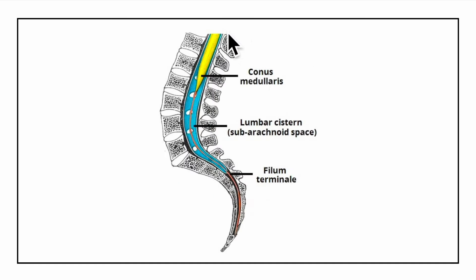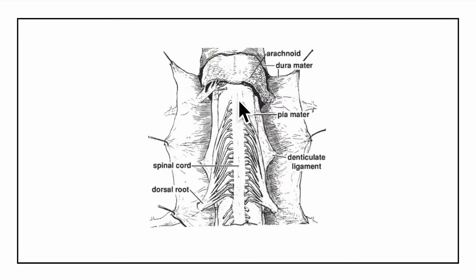In this diagram showing the lateral cross-section of the lower spinal cord and vertebral column, the spinal cord extends to the lower part of the first lumbar vertebra as the conus medullaris. Below the level of the conus medullaris, only the pia mater is continued as a thin fibrous cord called the filum terminale. The spinal pia mater undergoes modifications to keep the spinal cord in position during movements of the vertebral column.